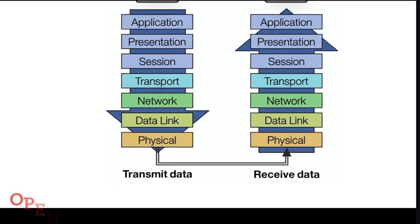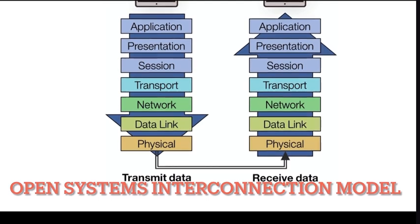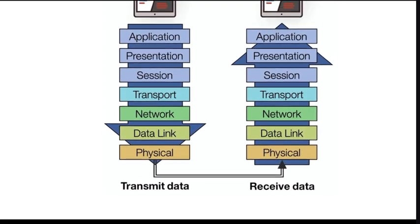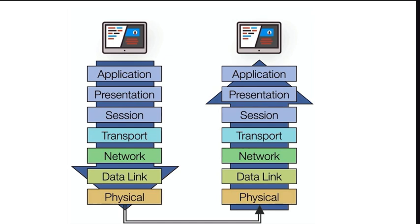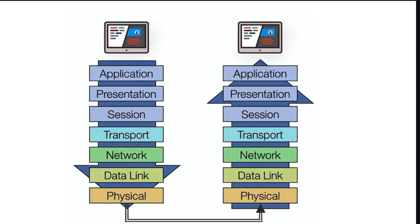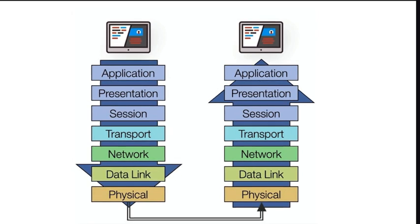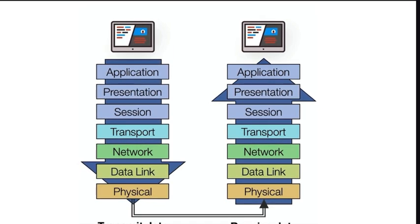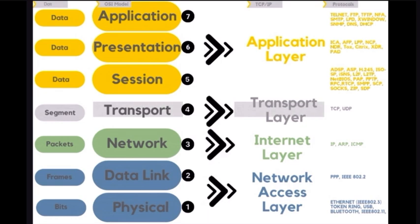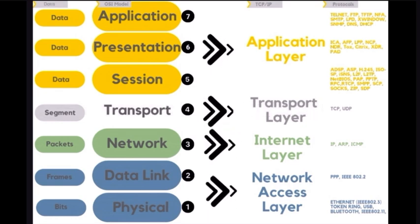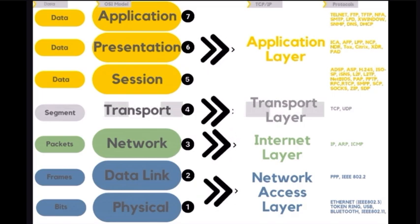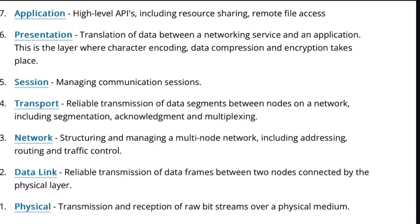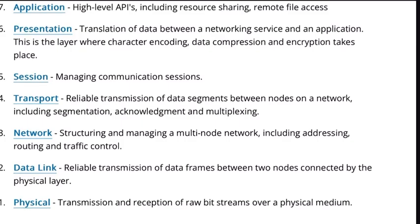Now we go to the OSI model or the open systems interconnection model, which is a conceptual framework that standardizes the functions of a telecommunication or computing system into seven abstraction layers. Each layer represents a specific level of functionality and the model helps in understanding, designing, and troubleshooting network systems. The seven layers from the bottom to the top are as follows. Number one, the physical layer, which deals with the physical connection between devices. It includes specifications like cables, connectors, and the transmission of raw binary data over a physical medium.